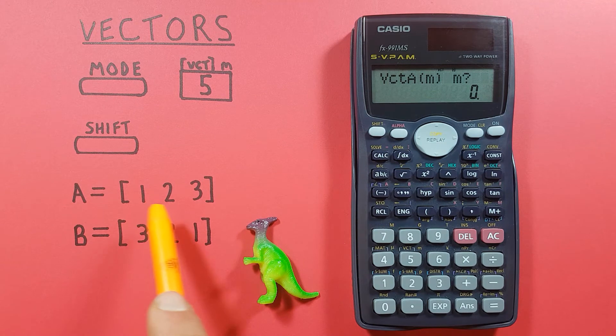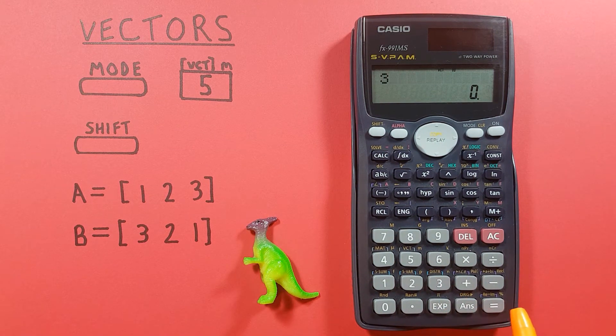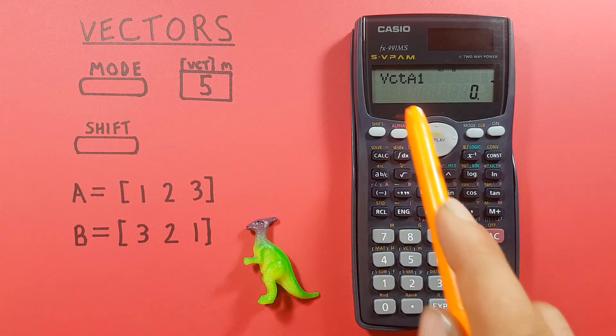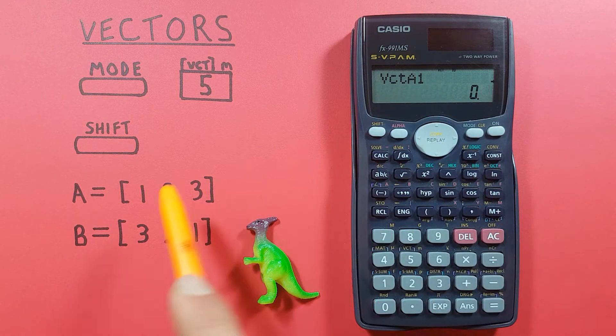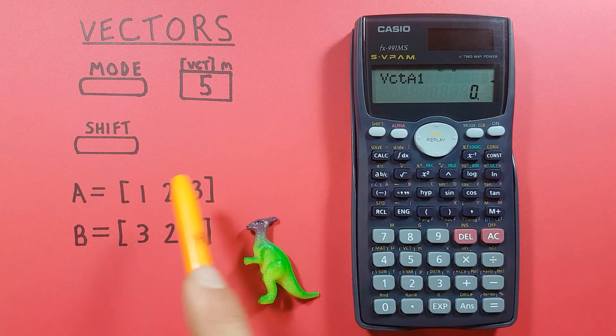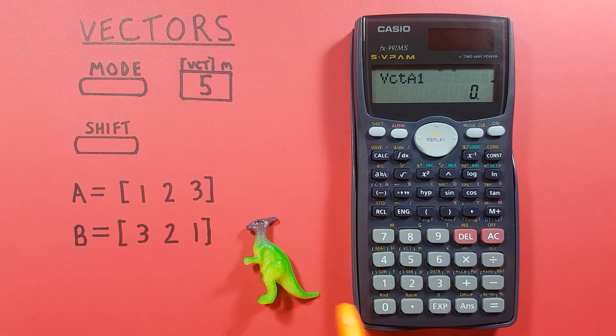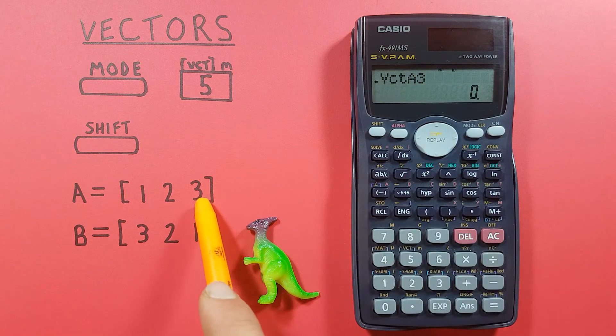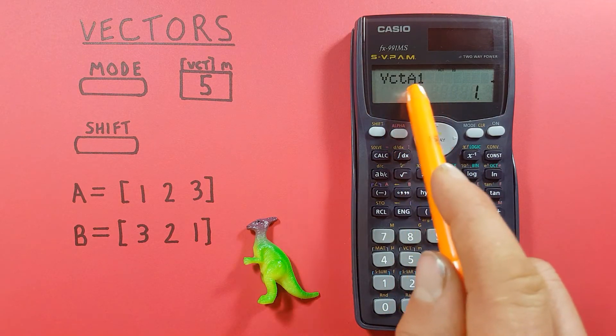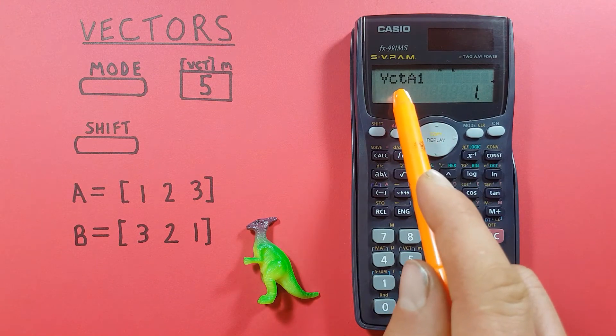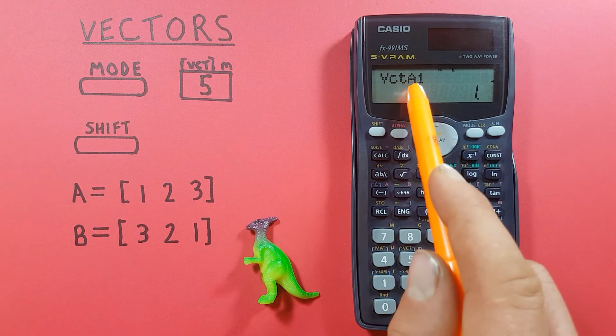Since we're using three dimensional vectors here we'll press 3 and enter. Now we see VCT A1, this is our first number or our first dimension. For A it's 1 so we'll press 1 enter, 2 we're using 2, and for our 3 again is 3. Press enter and you'll see it cycles back again to 1 so if you want to change something or edit it you can do that here.